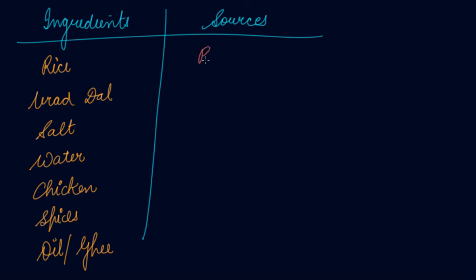Rice you get from plants. Urad dal - these are the seeds from plants. Salt you get from ocean or water - water is a natural resource you get from your environment. Chicken - you get chicken from animals.